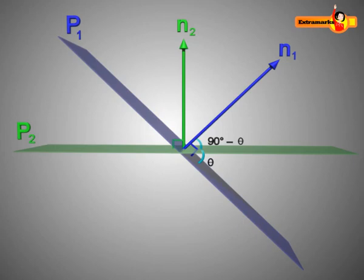Therefore, the angle between vector N1 and vector N2 will be 90 degrees minus 90 degrees minus theta, which is equal to theta.